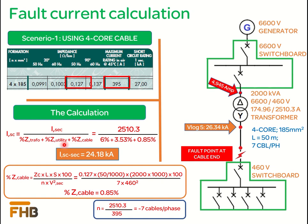These two values we have already calculated during our discussion of vlog 5 and we will take the values from our last discussion which were 6% and 3.53%. The third added value is the Z-Cable, which can be calculated using the formula shown here.